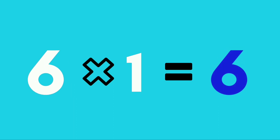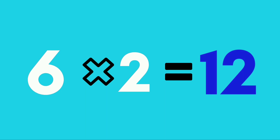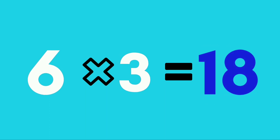Six ones are six. Six twos are twelve. Six threes are eighteen.